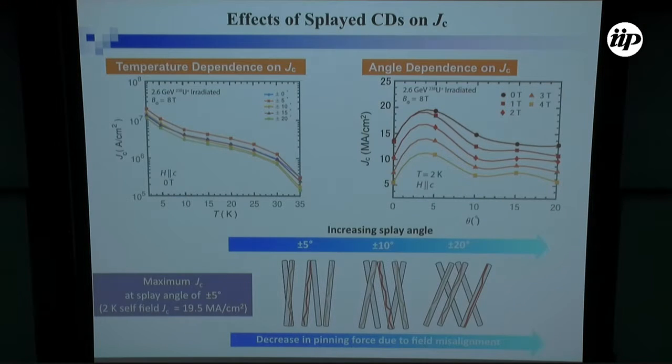This is, once again, the summary of the splay experiment. Here, this is temperature dependence of JC for several splay angles. The blue one, which is here, is just a parallel one. And obviously the orange one, plus minus five degree has the highest JC value at all temperature ranges. This is angular dependence of JC. Once again, JC is highest at five degrees. The highest value here is close to the combination of point and columnar defects 19, but it's slightly larger in this case, 19.5 mega amps per square centimeter.